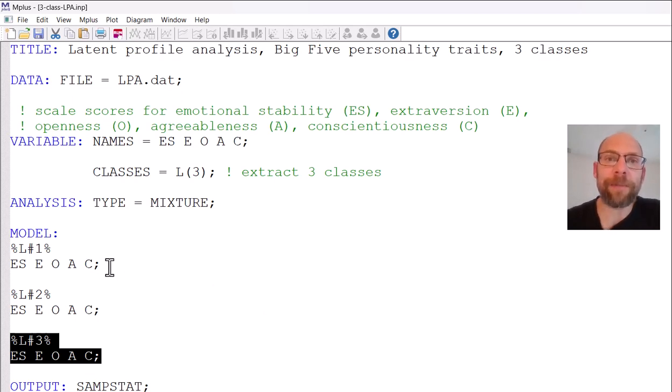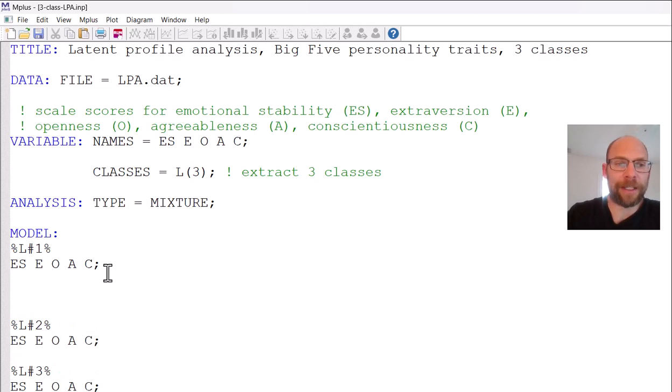Another thing that M plus does by default is it assumes that the variables do not have covariances within class. Another implicit default is that all the covariances between indicators are constrained to zero within each class. This is also something that sometimes we want to relax. You could do this by including a class specific statement in one class or several classes or all classes where you allow a covariance between certain indicators. I'm just making something up here to show you how that would work, not that it would make sense here. But if you wanted to allow emotional stability to have a within class association with extraversion in class 1 you would write ES with E semicolon. And then that covariance that is now by default fixed to zero would then be freely estimated.